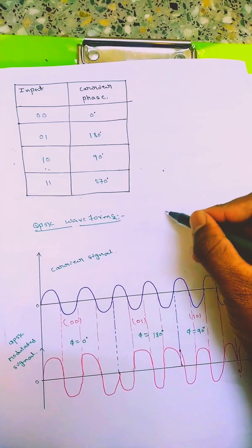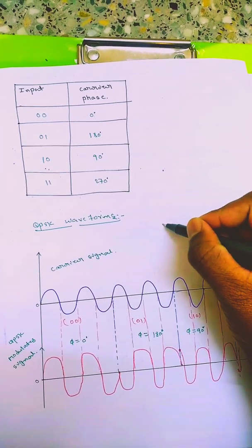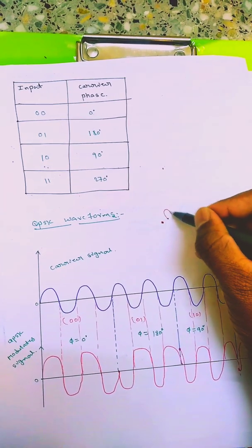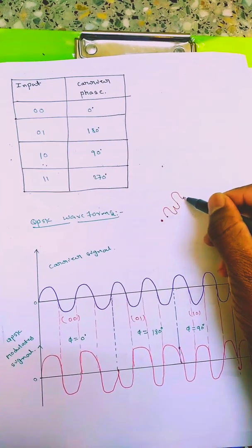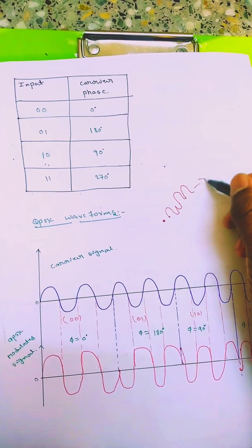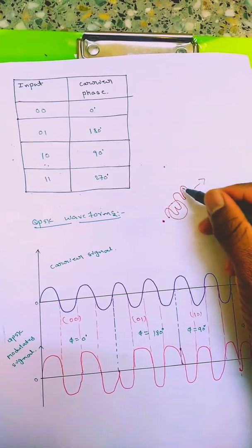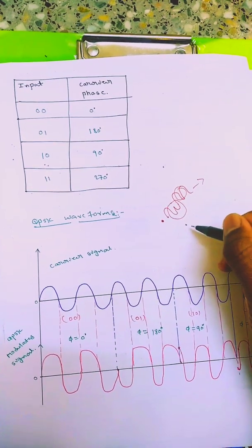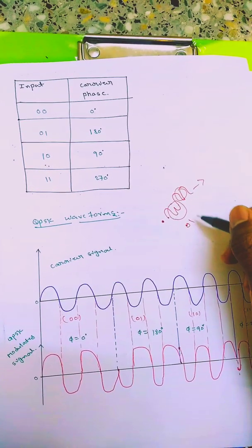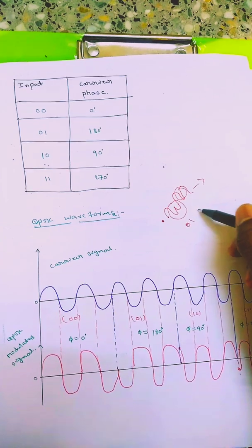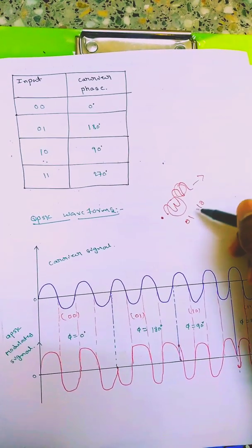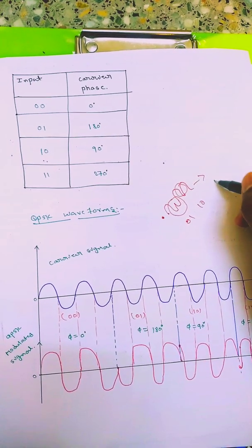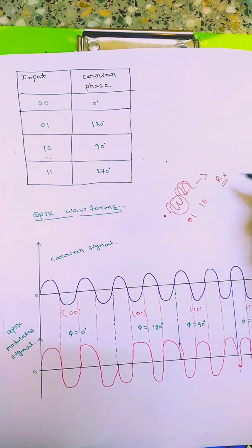When we transmit, the carrier's phase will be changed. When the carrier is received at the receiver, depending on the carrier phase the bits are determined. Suppose this is 180 degree phase shift, then it's assumed that 01 is transmitted. If it's 90 degree phase shift, then 10 is transmitted. Like this, the transmitted data at the receiver will be decoded.